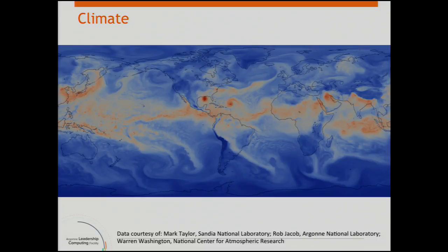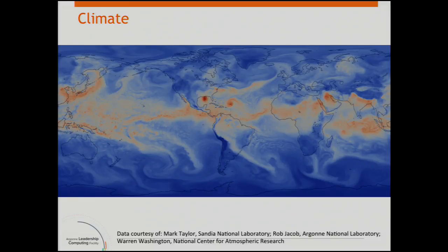Another example is climate simulation. They start with observed data as the seed point for their simulation and have a number of coupled models. What we're looking at here is total precipitable water — the red regions show high concentrations of moisture in the atmosphere, while bluer regions show lower concentrations. At the time, this was one of the largest resolution global-scale simulations, done at a resolution of one-eighth of a degree in latitude and longitude.